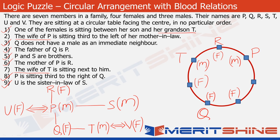Statement seven says the wife of T is sitting next to him, so the other female sitting next to T has to be his wife V. Let's write V there. Looking at the structure now, we can see four females are already placed, so the remaining vacant position has to be occupied by a male — and that male has to be S, the third male. Let's write S there. The last person left is U, the only person whose name is not yet on the structure. Let's put U there, and with this we have completed the circular arrangement.